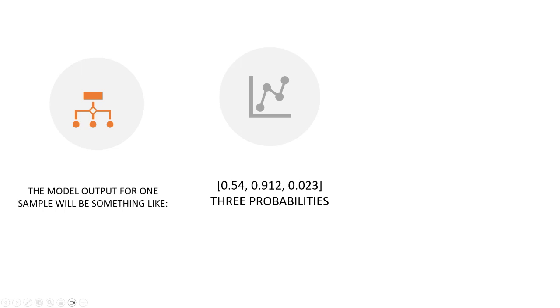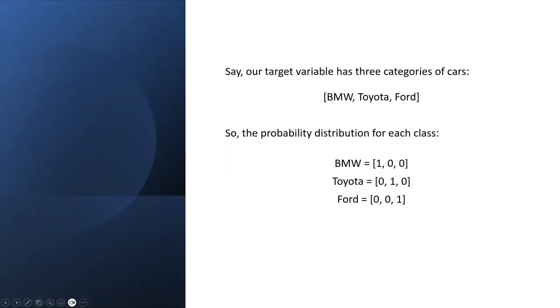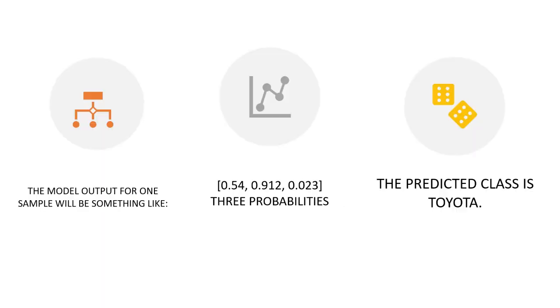In these three numbers, 0.912 is the highest one. Because 0.912 is in the middle one, so the middle class wins. The middle one was Toyota, right? So for this training example, the predicted class is going to be Toyota.